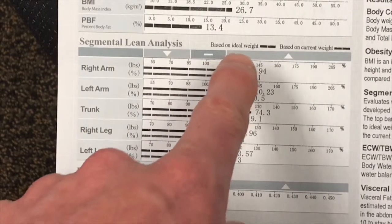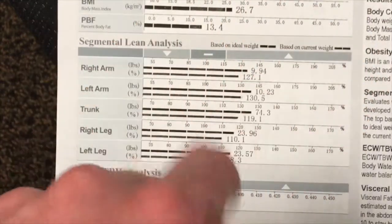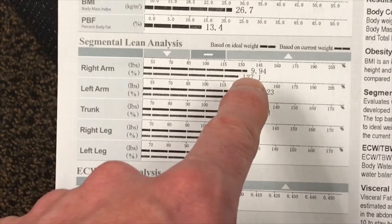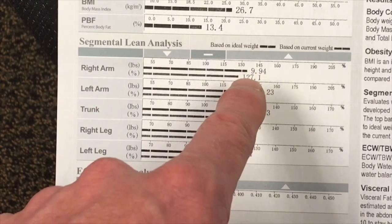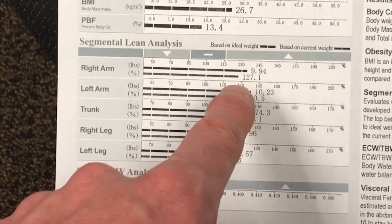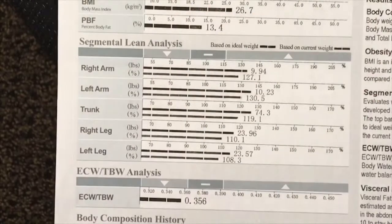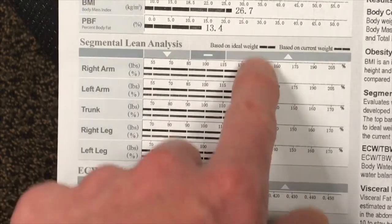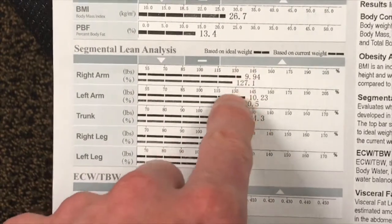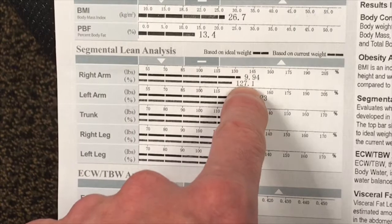When we look at the ideal weight column — if this person was at their quote-unquote ideal weight, they would be 30-some percent higher in terms of their right arm lean mass. But based on their current weight, they're only 27.1. I don't agree with ever basing anything off of weight, so I tend to skim over that. Don't put too much thought into it.